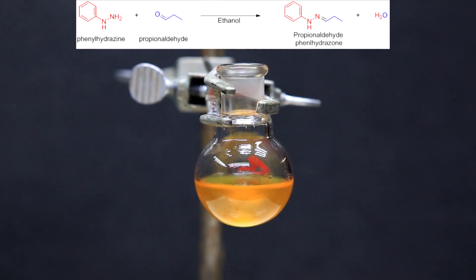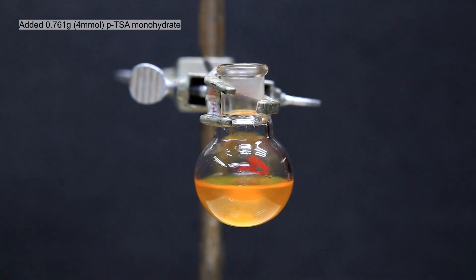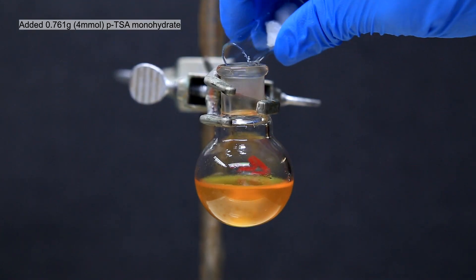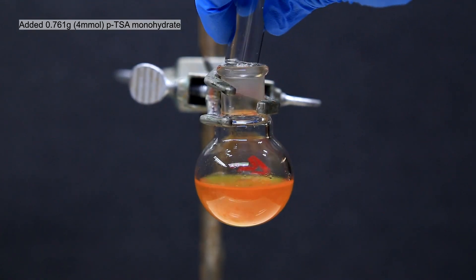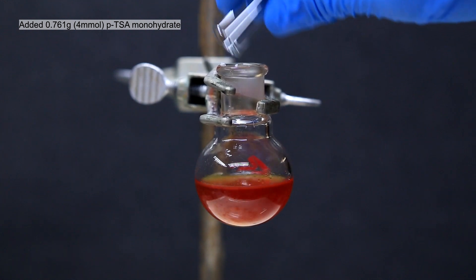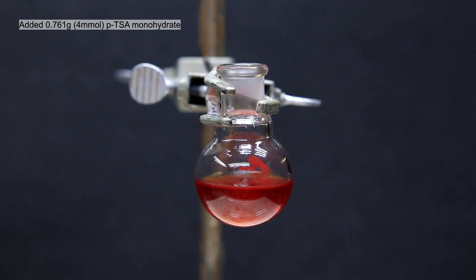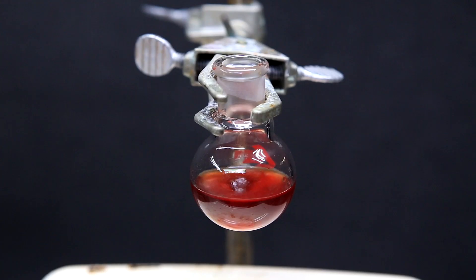This is the important intermediate that, when acid catalyzed, will form our desired indole. After about 10 minutes, I added 0.761 grams of the monohydrate of p-toluene sulfonic acid. You can see that immediately when it's added, the solution turns a deep red.